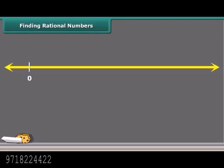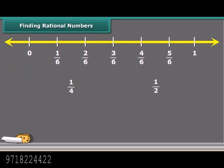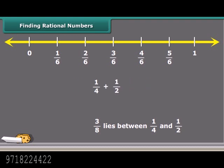Did you know that there are infinitely many rational numbers between any two rational numbers? We will learn about it using the mean method. Let us find a rational number between two rational numbers. We can say 3 by 8 lies between 1 by 4 and 1 by 2. First, find the sum of these numbers, which comes out to be 3 by 4. Now divide this sum by 2 — we know division flips the second number and the sign changes to multiplication.